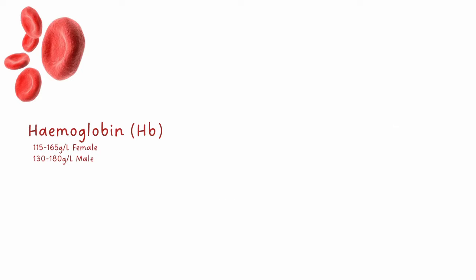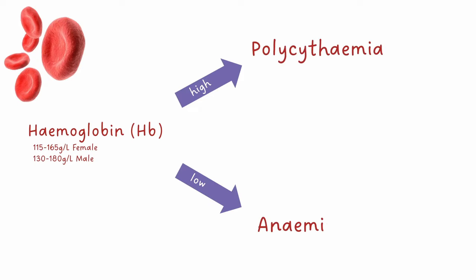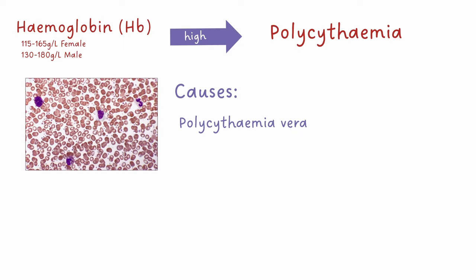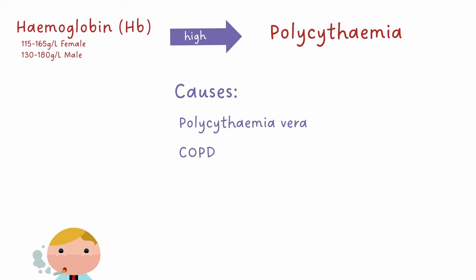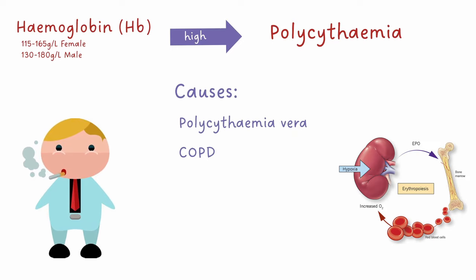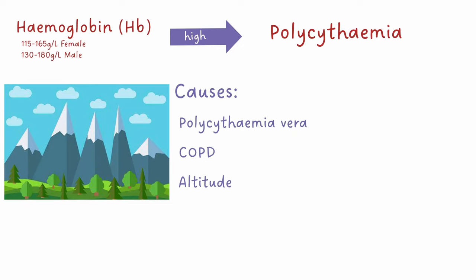When looking at the full blood count report, haemoglobin can be high, meaning that patients have polycythemia, or it can be low in anaemia. Causes of polycythemia include polycythemia vera, which is a myeloproliferative disorder where the bone marrow produces excess red blood cells. COPD can also increase haemoglobin as patients are often hypoxic for prolonged periods, inducing erythropoietin release from the kidneys which promotes red blood cell production. Living at altitude or taking exogenous EPO will also increase haemoglobin.